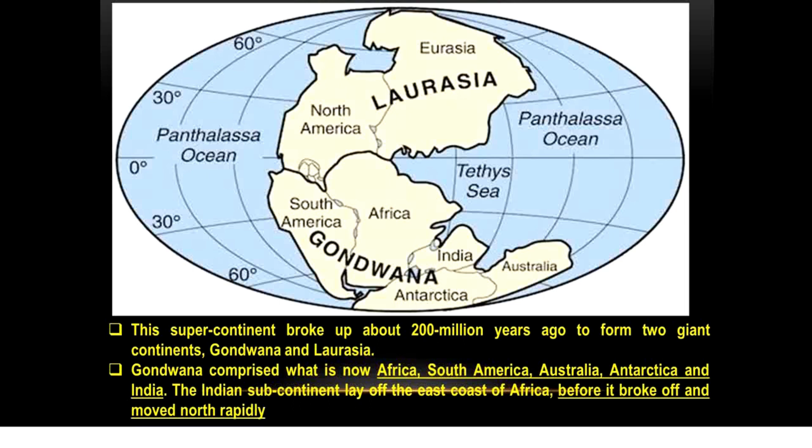Gondwanaland comprised what is now Africa, South America, Australia, Antarctica, and India.